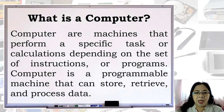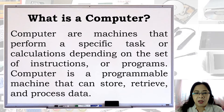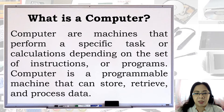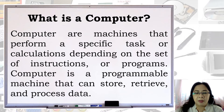What is a computer? Computers are machines that perform a specific task or calculations depending on the set of instructions or programs. A computer is a programmable machine that can store, retrieve, and process data.